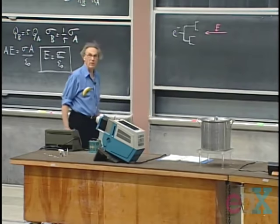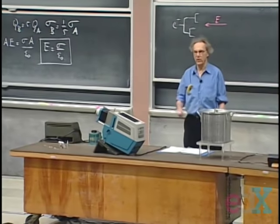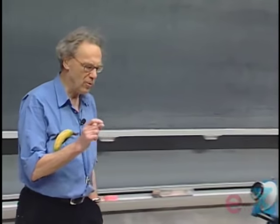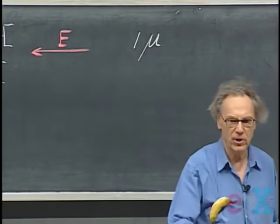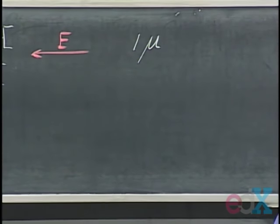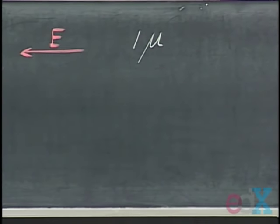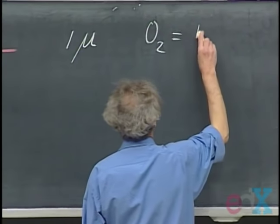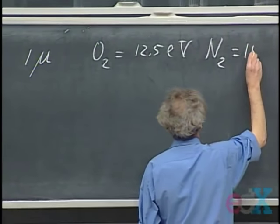How strong should the electric field be? We can make a back-of-the-envelope calculation. If you take air at one atmosphere, dry air, at room temperature, then the electron on average will have to travel about one micron — 10⁻⁶ meters — between collisions with molecules. To ionize an oxygen molecule takes 12.5 electron volts, and to ionize nitrogen takes about 15 electron volts.